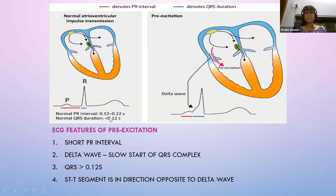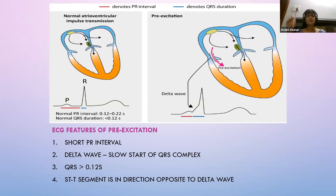ECG features of pre-excitation are seen only when the patient is in normal sinus rhythm, not during an episode of SVT. The PR interval is shortened because the accessory pathway conducts impulses rapidly without the AV nodal delay, so ventricular contraction begins earlier.